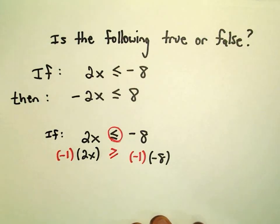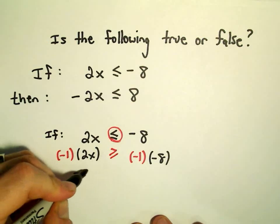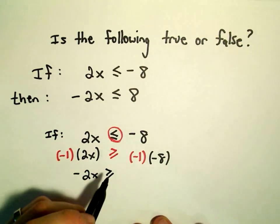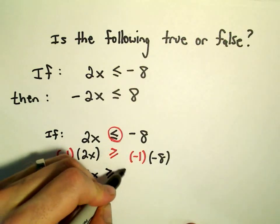So if it were true that 2x is less than or equal to -8, we would end up getting that -2x is actually greater than or equal to positive 8.